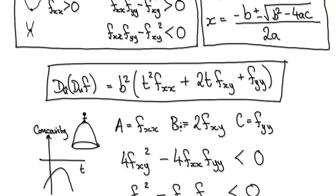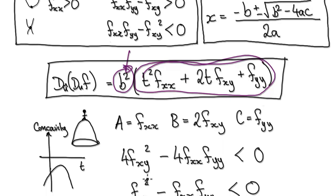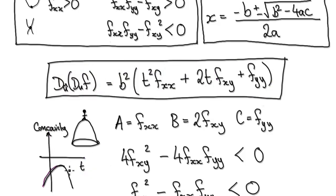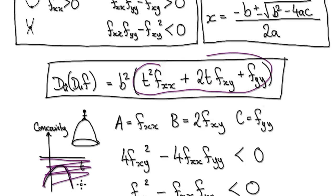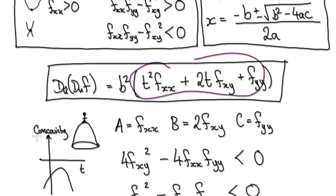Going back to here — the concavity, this thing is always positive. So we only need to analyze this quadratic. If you plot the graph of concavity versus t, if this quadratic here always stays negative, then the concavity is always negative, meaning you're at a local max. If this thing here is always positive, then you know you're at a local min, because the concavity always bends upward.